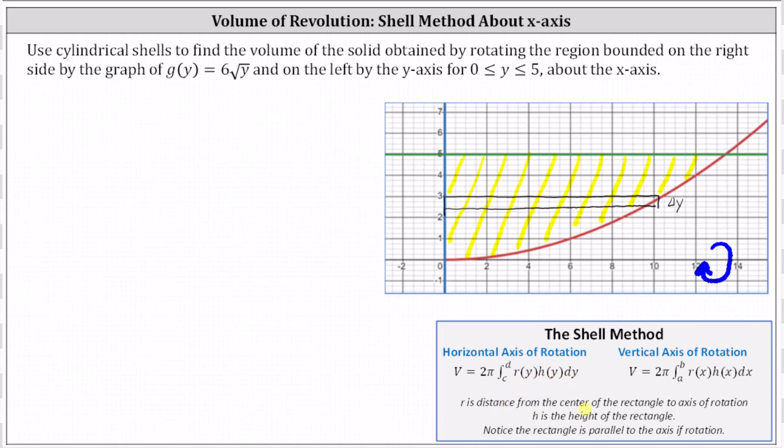where r is the distance from the center of the rectangle to the axis of rotation, which means in our case, r(y) is this vertical distance here. Notice r(y) is simply equal to y over the closed interval from zero to five.